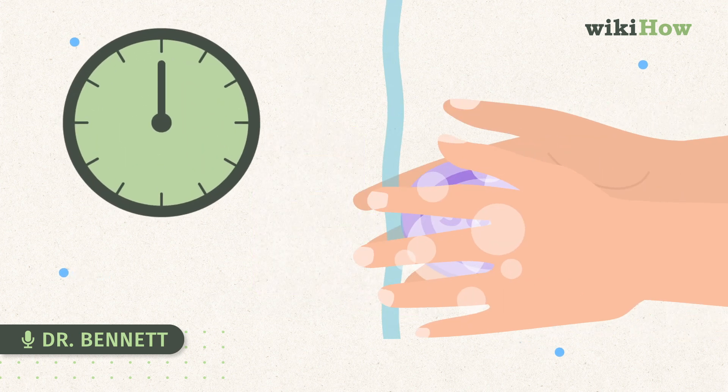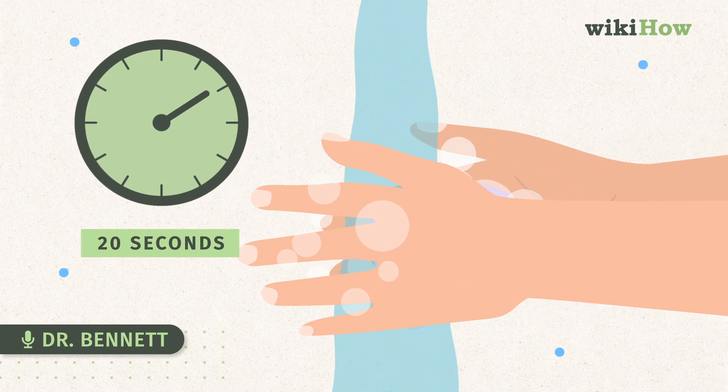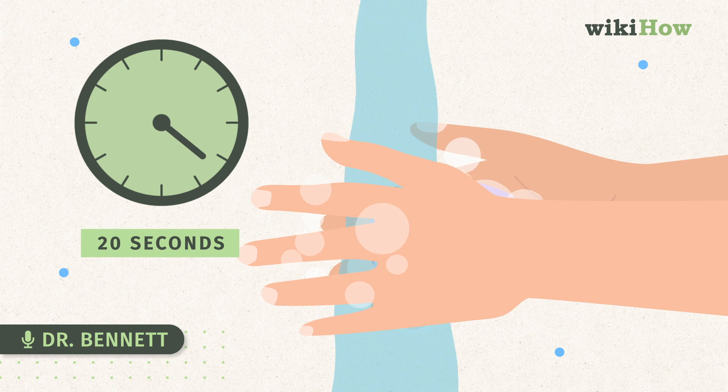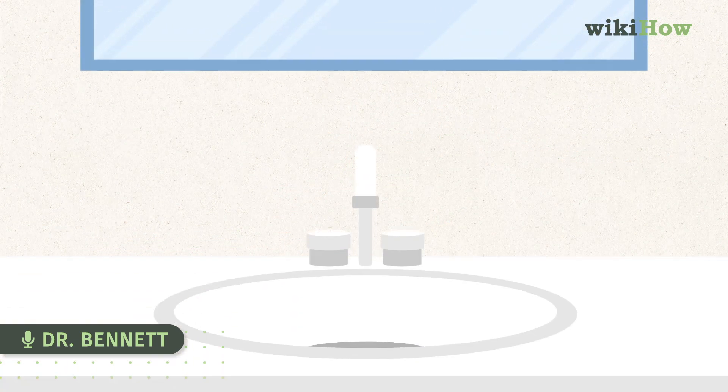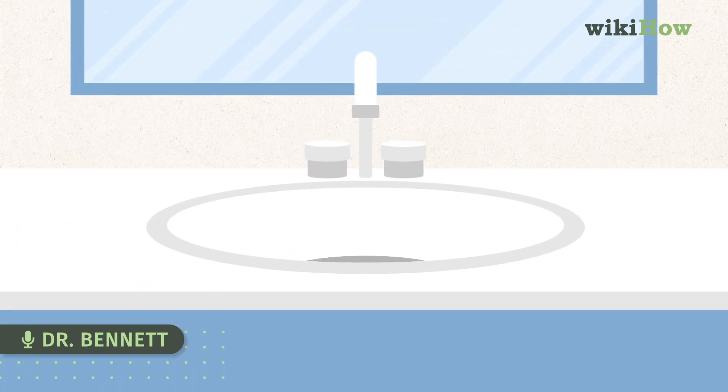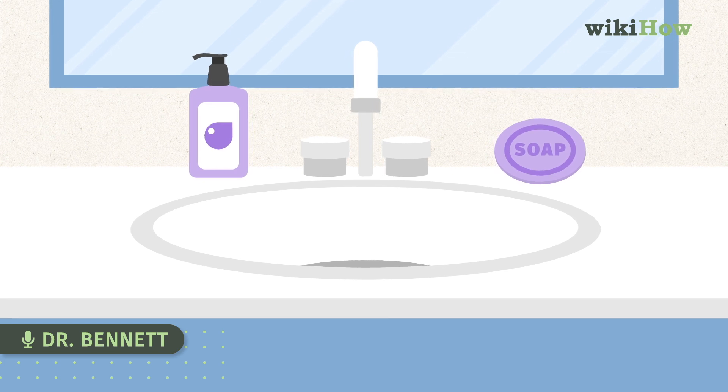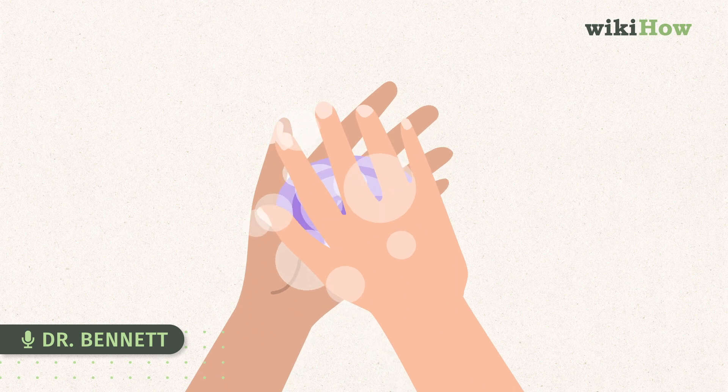You want to wash for at least 20 seconds with a lot of soap. Using soap when you wash your hands is the most important thing. You don't need hot water, but the soap is critical. And what you want to do is basically make sure that the soap has good contact with all the parts of your hands.